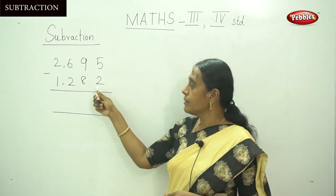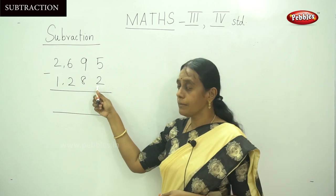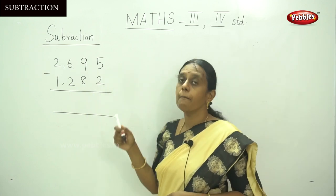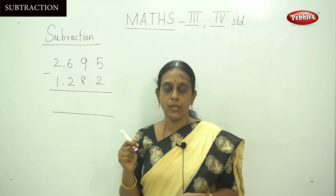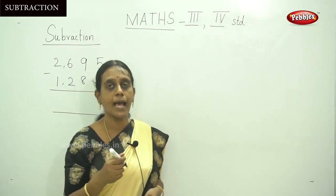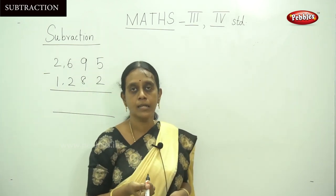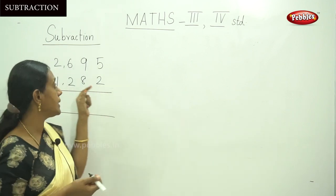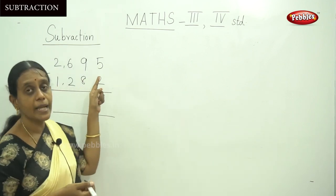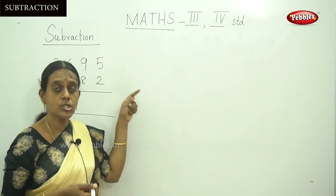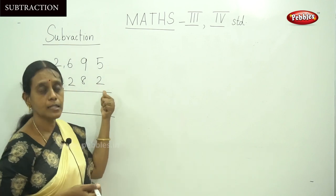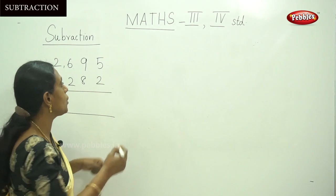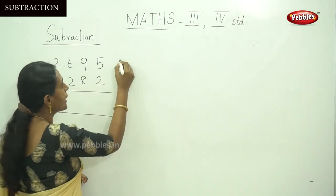The minuend is the number from which another number is subtracted. In subtraction, the first top number — the greater number from which the other number should be subtracted — is called the minuend.